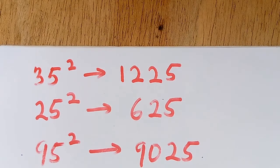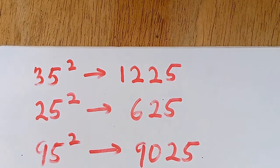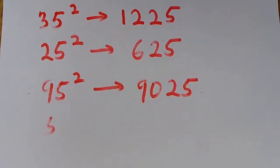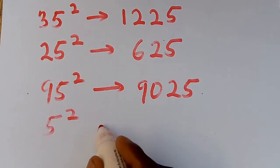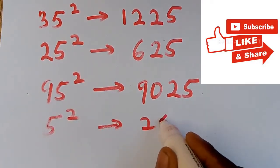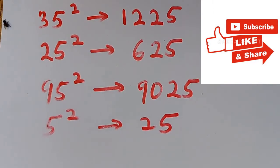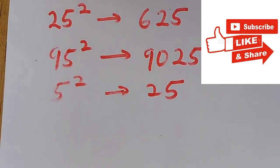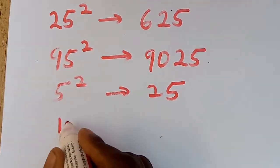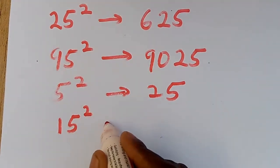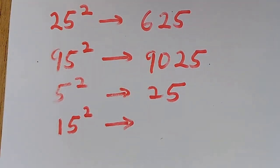Let's take another one and after that I will unveil the trick. So let's take 5 squared — everybody can tell me that 5 squared is 25. Let's take another one: 15 squared. And 15 squared gives us 225.